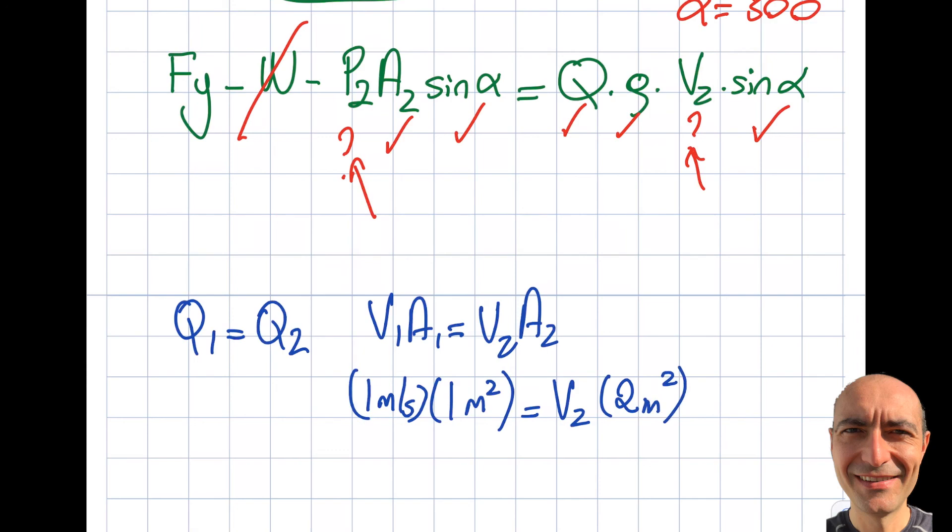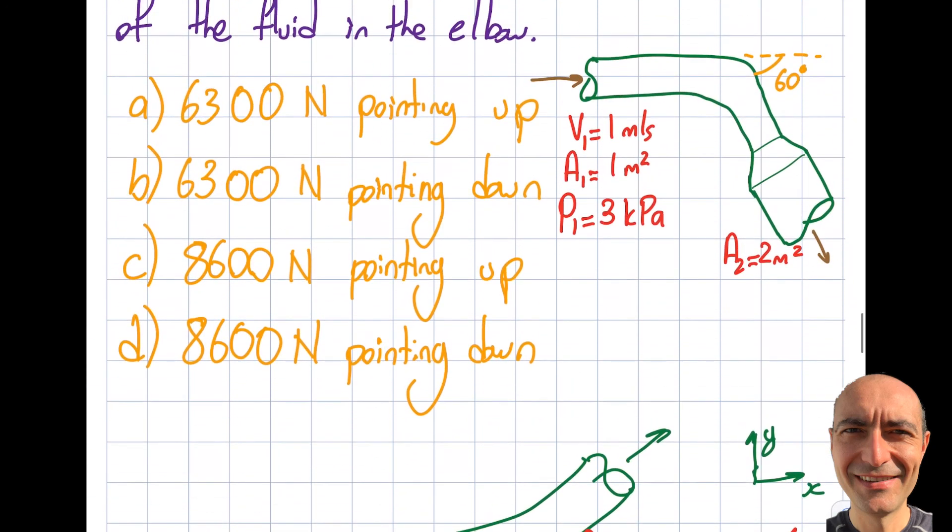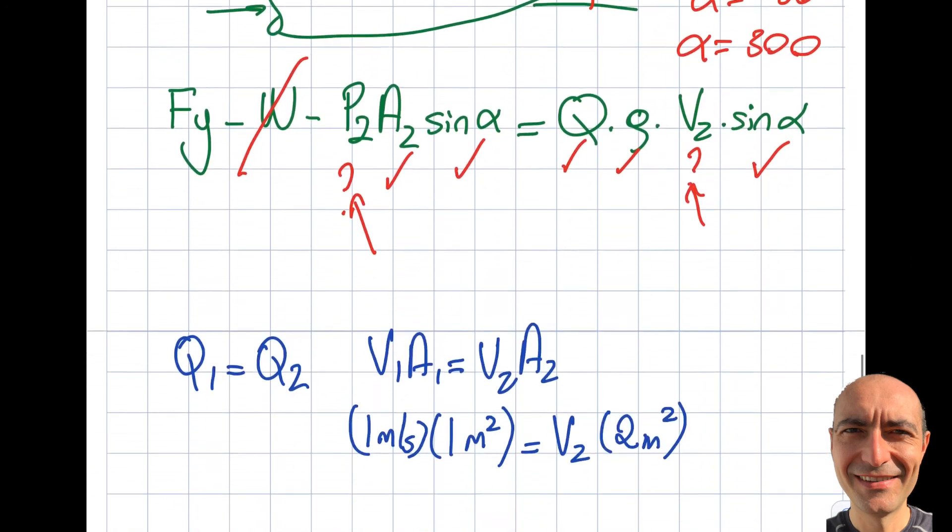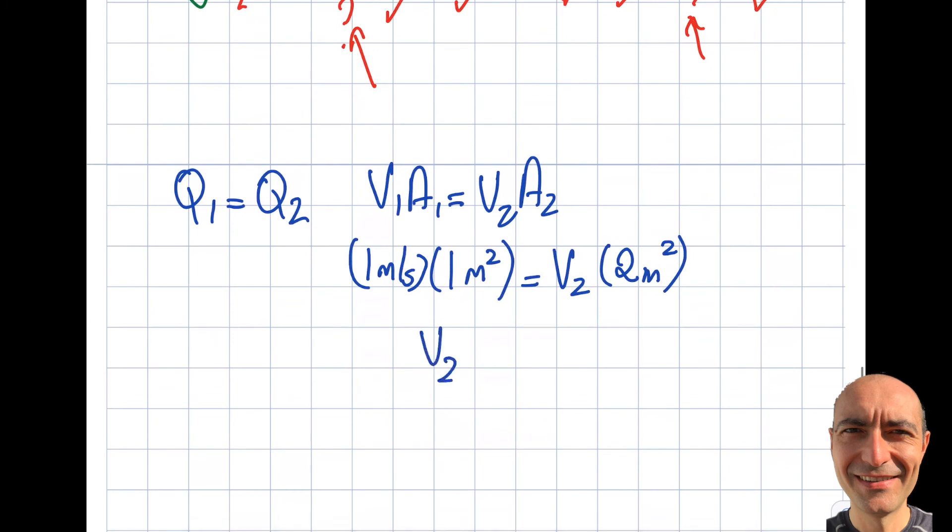Let's double-check - yeah, that seems right. From here I get v2 as 0.5 or half meter per second. So far so good.